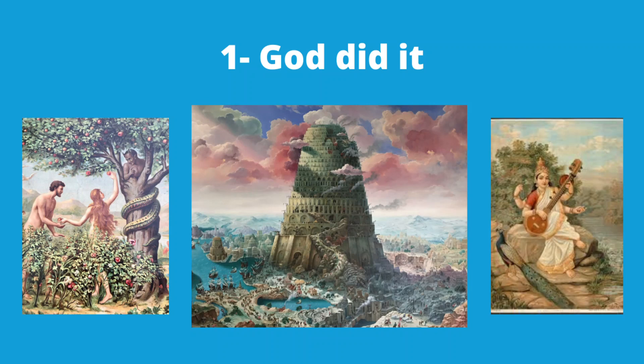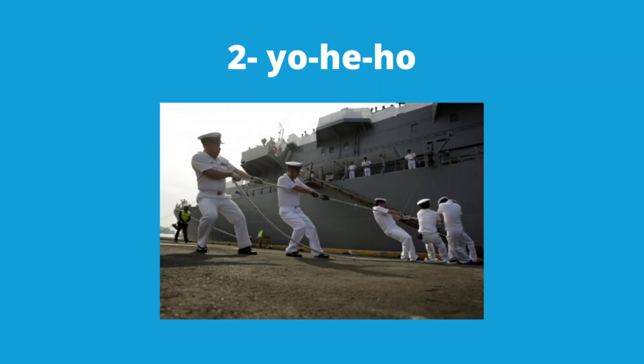In Hinduism, language came from Saraswati, wife of Brahma, the creator of the universe. In Islam, God taught Adam the speech. So you see the pattern. The second theory is the natural sound or yo-he-ho theory — that language began as rhythmic chants, perhaps ultimately from the grunts of heavy work.